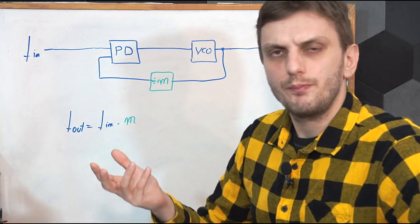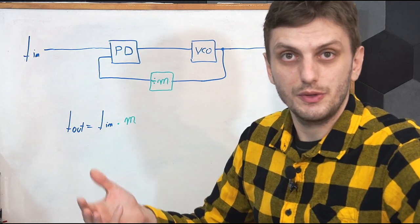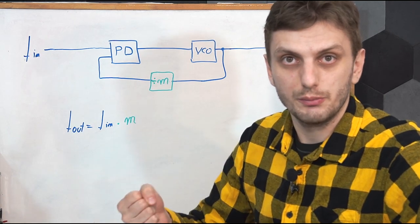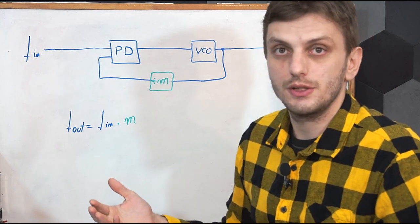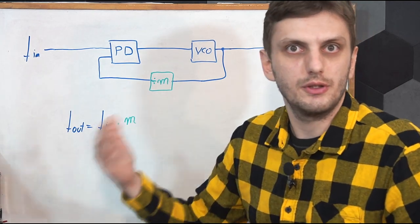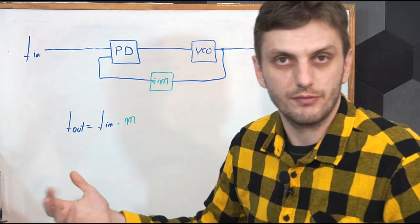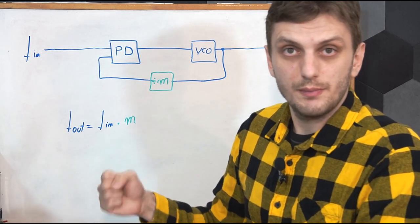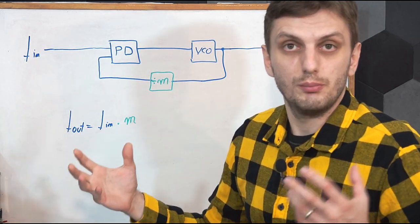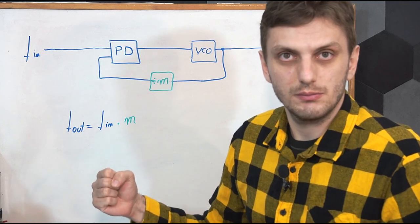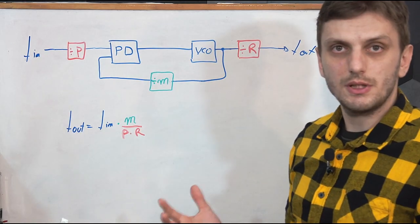But what if we want a fractional ratio of our output frequency relative to our input? Say we want to go from 1 MHz to 1.33 MHz or some other similar value. The key to this is the usage of either pre- or post-scalers, or both of them.